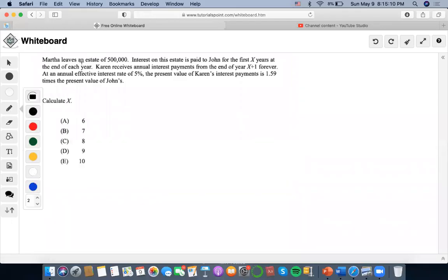Hi, so for this problem, it says that Martha leaves an estate of $500,000. Interest on this estate is paid to John for the first X years at the end of each year, and Karen receives annual interest payments from the end of year X plus one forever.